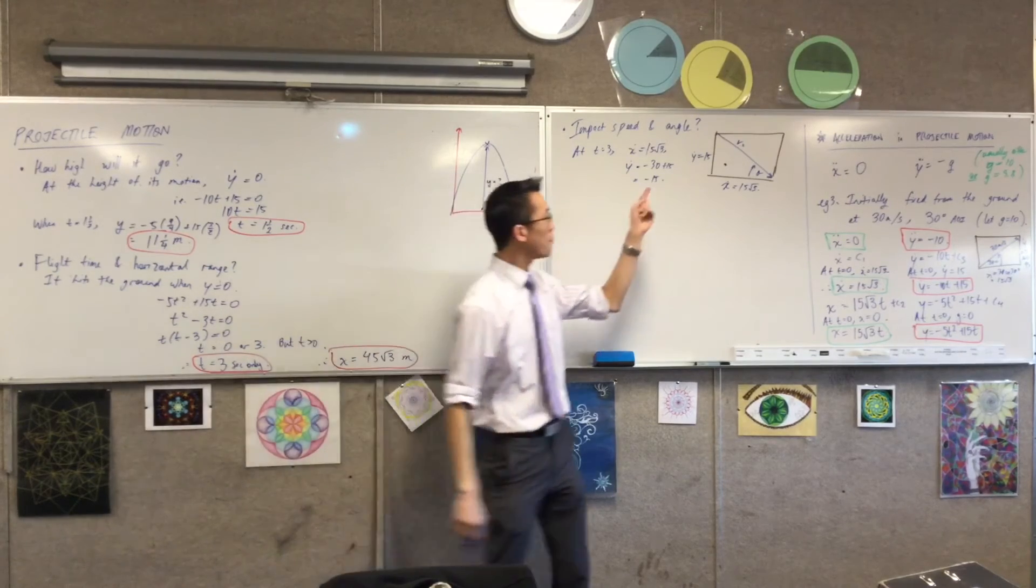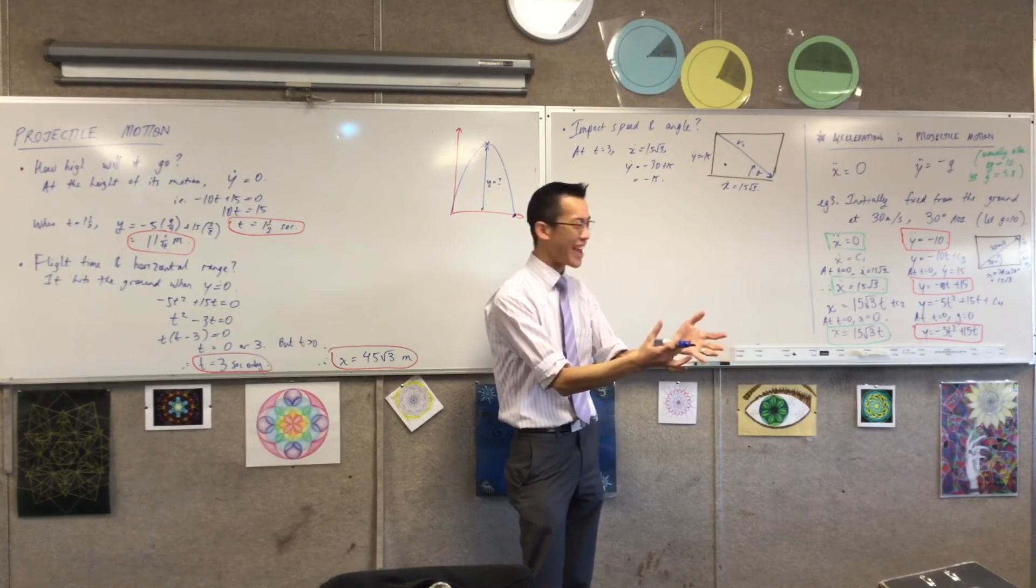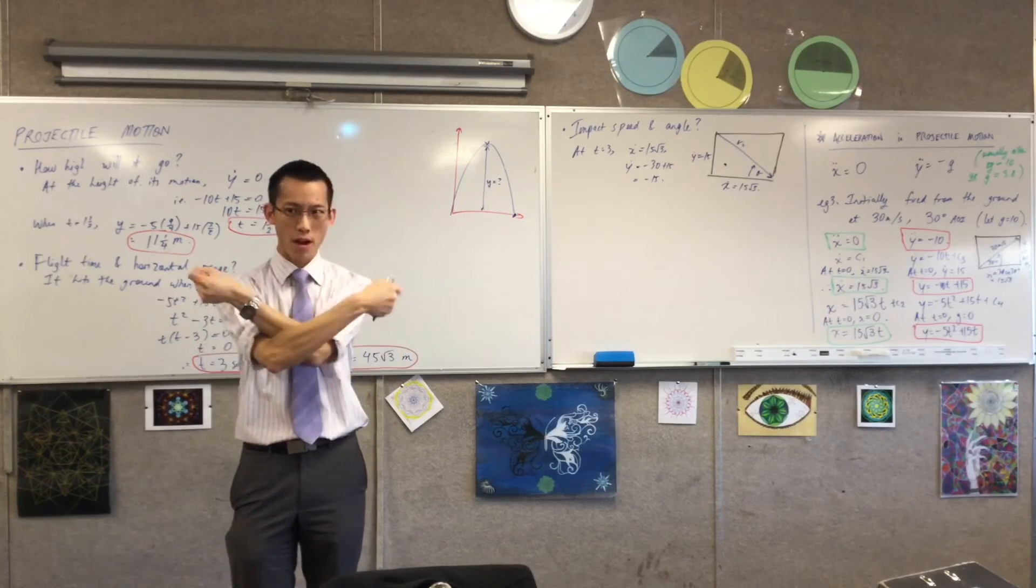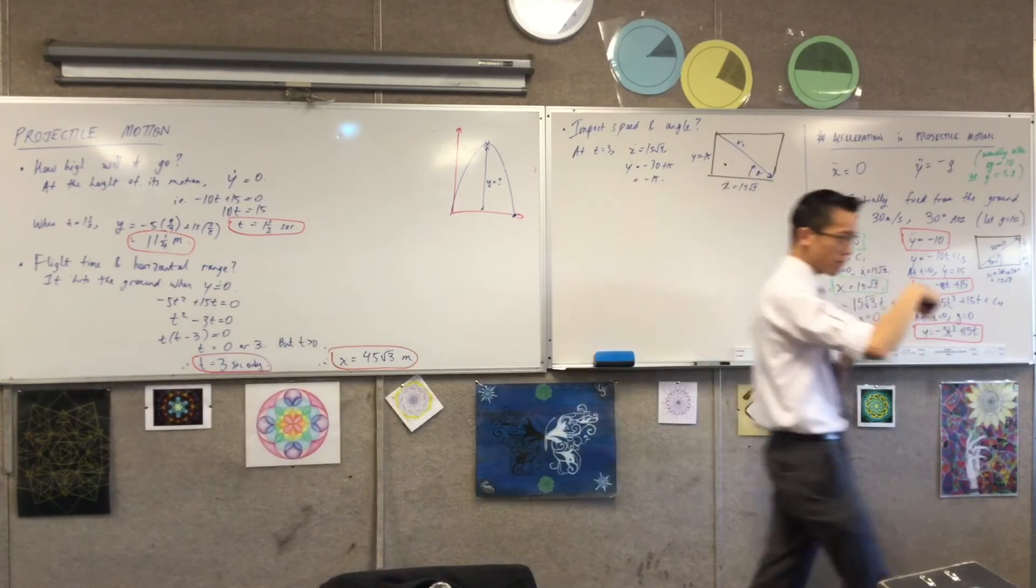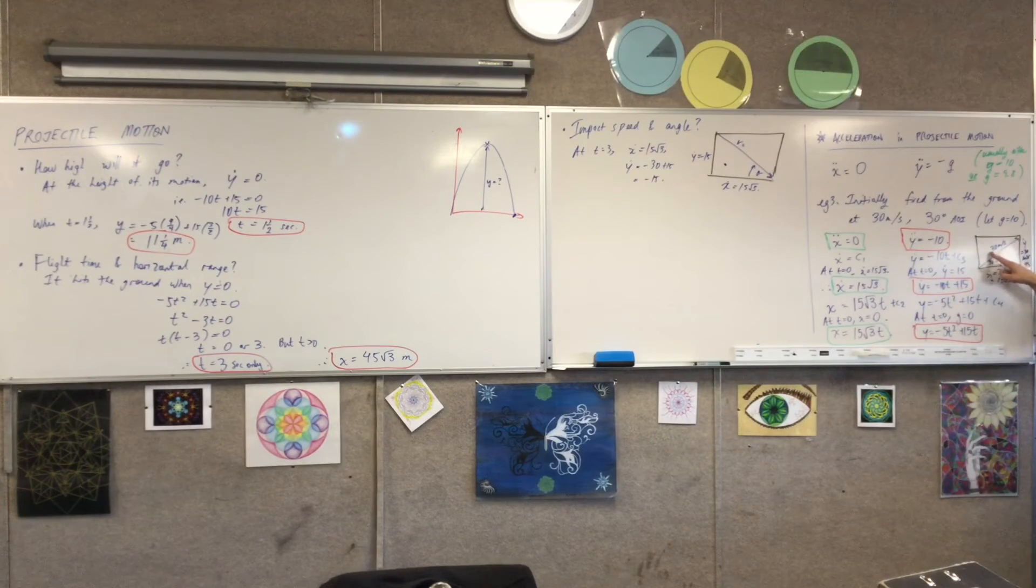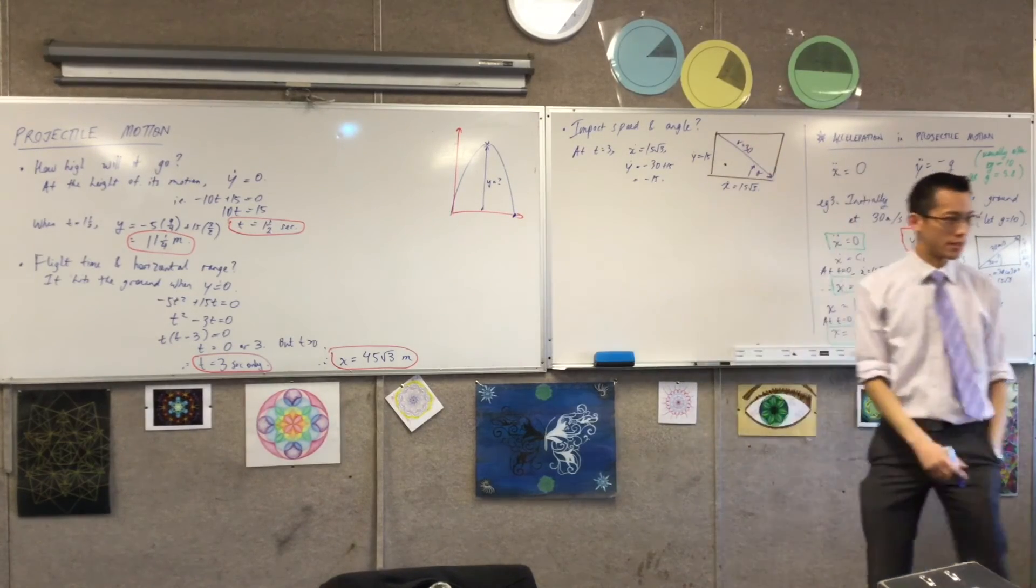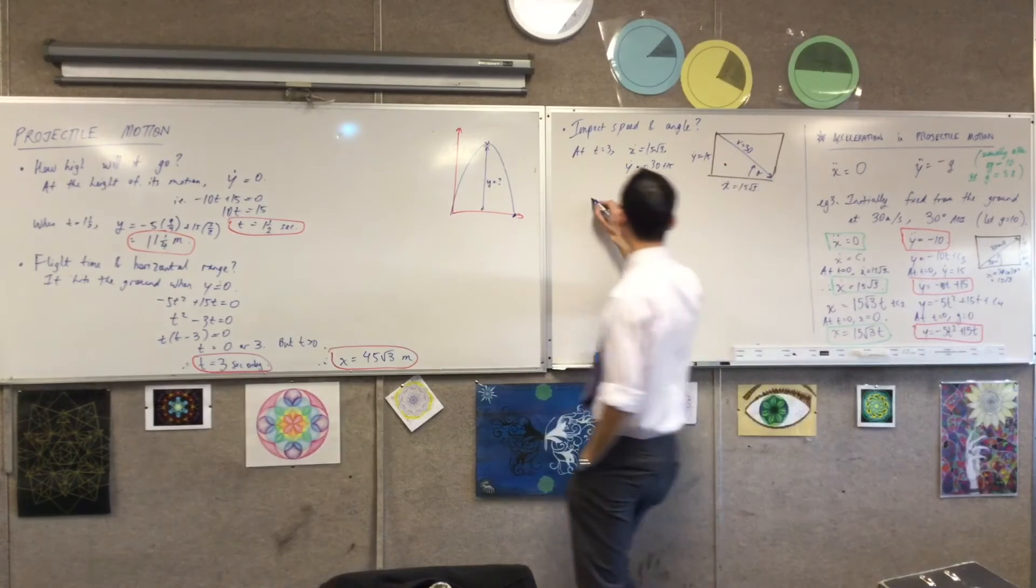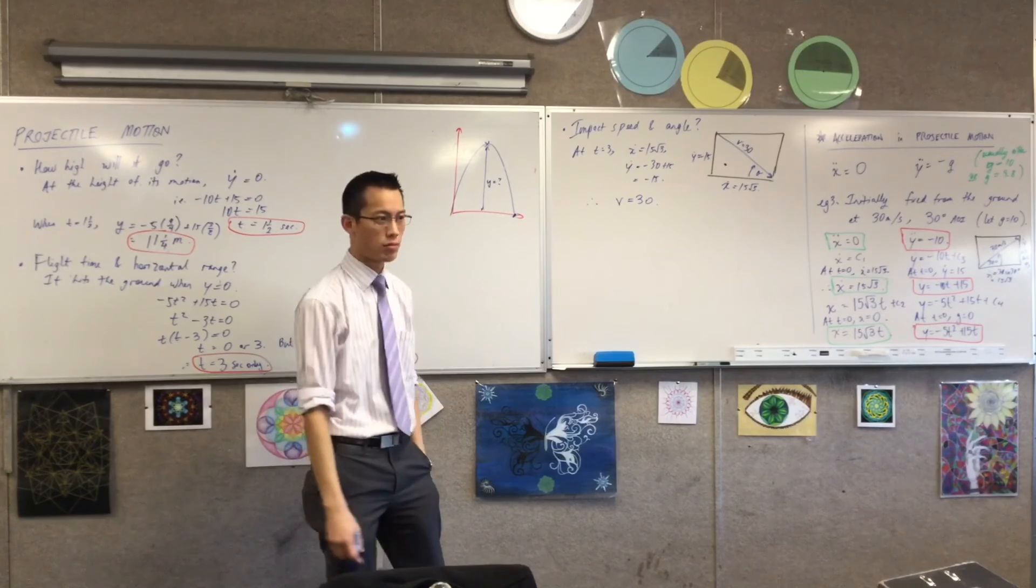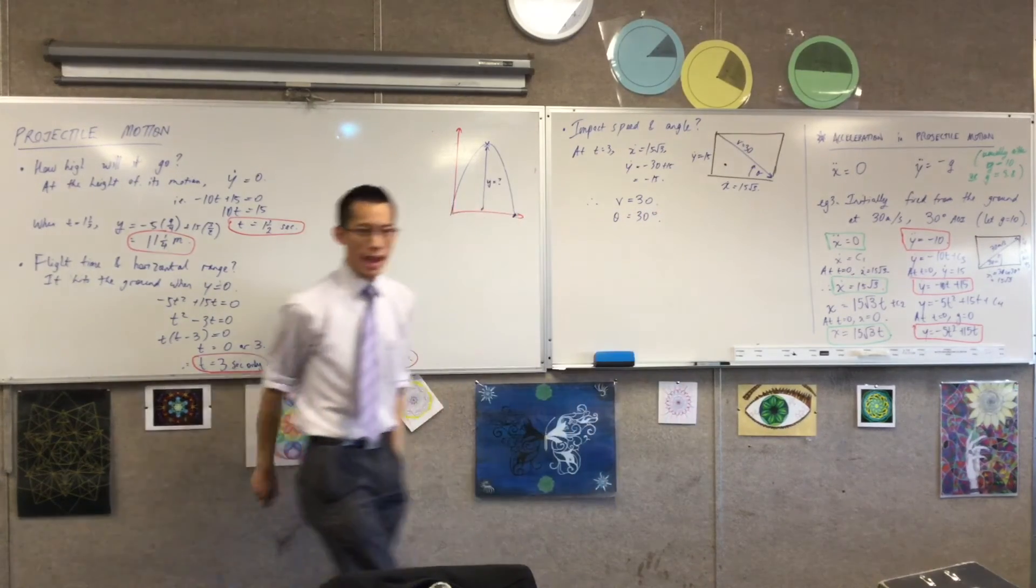Now interestingly, when you compare this diagram with that diagram, they're congruent to each other, aren't they? All the dimensions are the same, but what's different is I've been flipped over. I've been reflected horizontally. I'm coming down rather than going up. But because everything is congruent, that means I know what this is. You see that? I could use Pythagoras again, but we've already worked this thing out. So therefore, v equals 30. What about the angle? It's also congruent. So 30 degrees is my angle of impact.